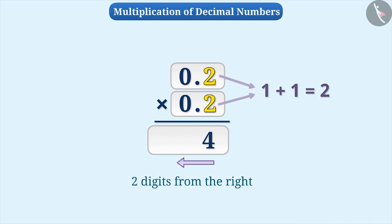Let me tell you. We have to keep the decimal point two digits from right, but there is no number to the left of 4.